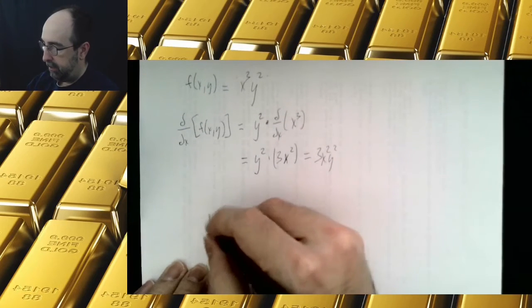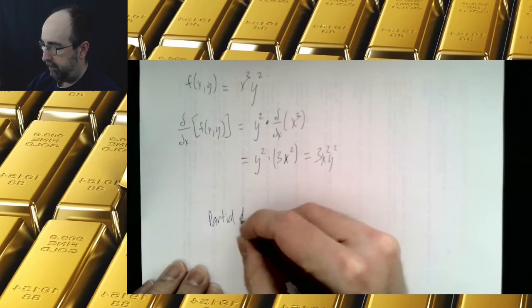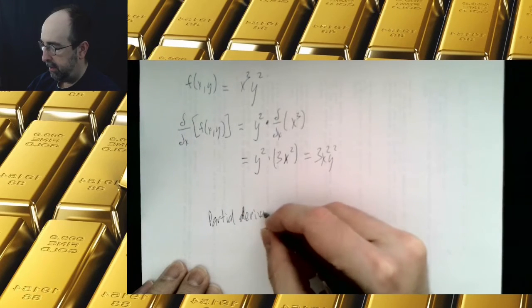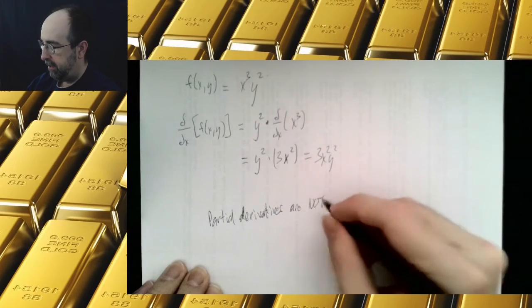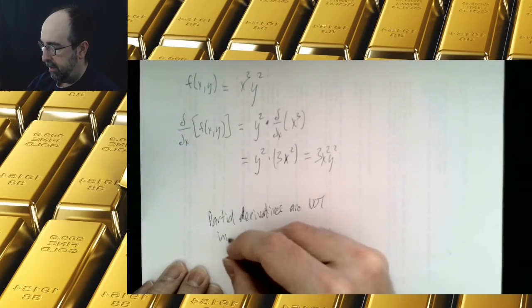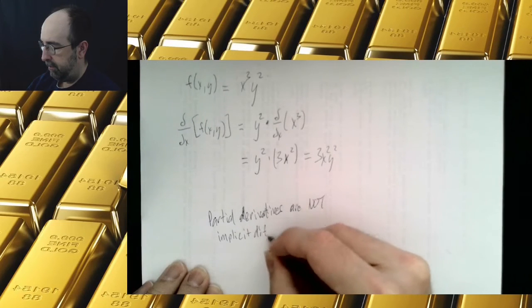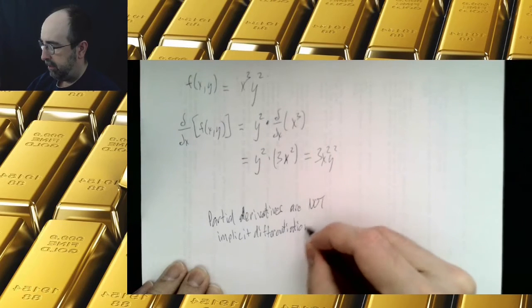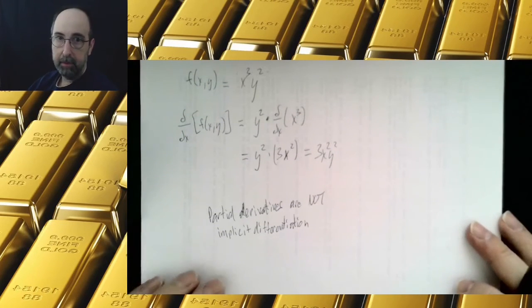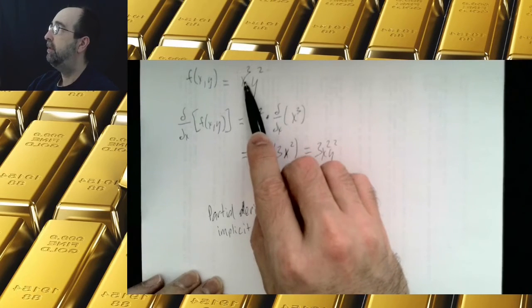So I'm going to point out here that partial derivatives are not implicit differentiation. A lot of people will think this problem is harder than it's supposed to be. They'll think this is a function of x times a function of x and they'll do the product rule.